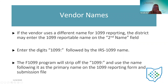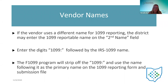Regarding vendor names: if the vendor uses a different name for 1099 reporting, the district can enter that name in the 'name two' field in USAS web and VendScreen wherever they maintain that information. What they're going to do is enter the digits '1099:' followed by that IRS name they want to use. What happens then is the F 1099 program will strip off the '1099:' and just use that name as the primary name on the 1099 form and for the submissions.